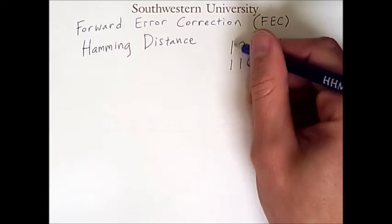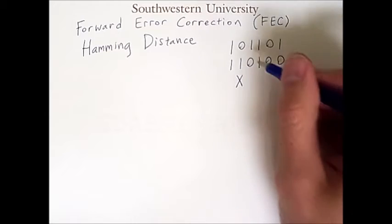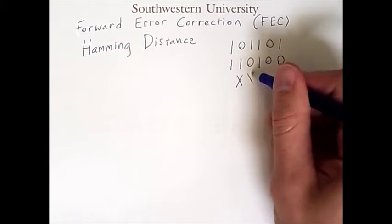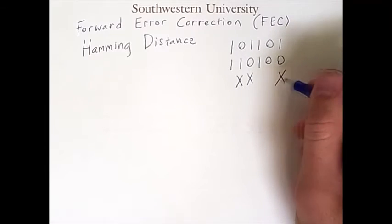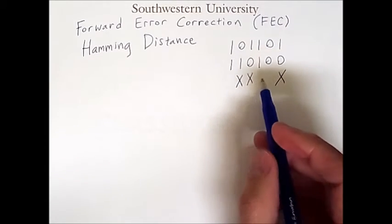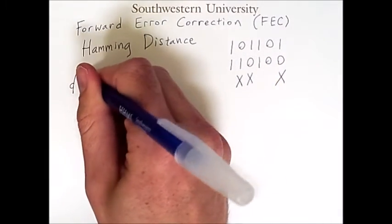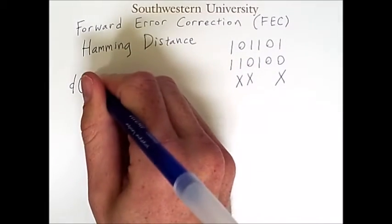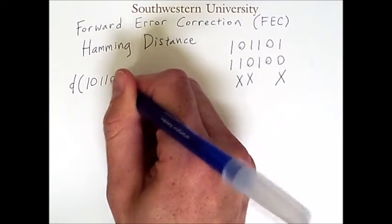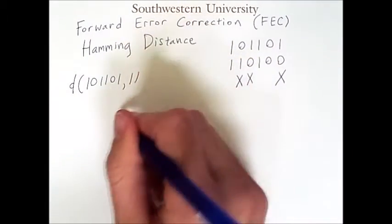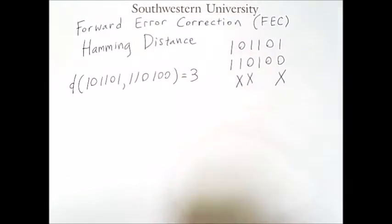So these are both ones but here we have a zero and a one, so that is one position where they differ. Here is another position where they differ. They're the same in that position and in that position but they differ here. So the distance between these two bit strings is 3, and we will sometimes use a little d to indicate that the distance between the string 101101 and 110100 is equal to 3.